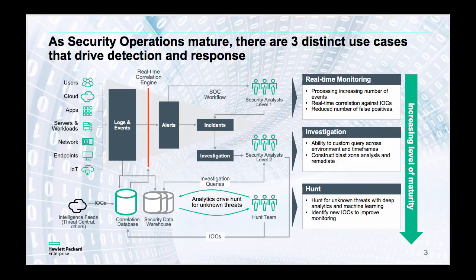A further detailed level of investigation is carried out by level two analysts to ascertain exactly what's going on: what's the importance, the relevance, the impact, and what do we need to understand with regards to users? We need an incident management process in place. They interact with systems to investigate through our data — running investigation queries against something like a security data warehouse — to understand the actors, attackers, and indicators of compromise.